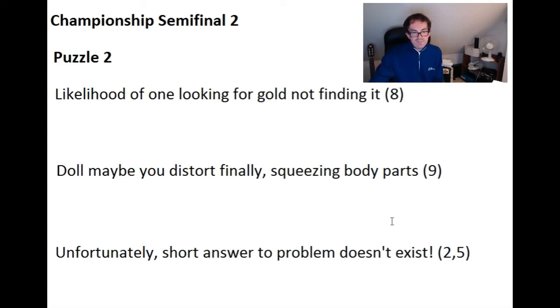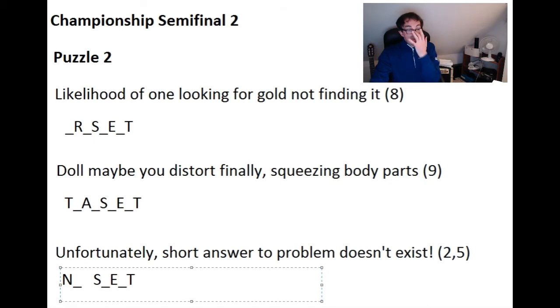I'm going to put in some letters to help you. So there you go, there are the letters. So the first one, have a think, pause the video by all means if you want to really give it some thought. The definition here is likelihood. And then you need to realize that somebody who's looking for gold is a prospector. And if the prospector doesn't have his OR at the end, an OR is an abbreviation for gold, then you have prospect, which is likelihood. That's a beautiful clue, I thought.